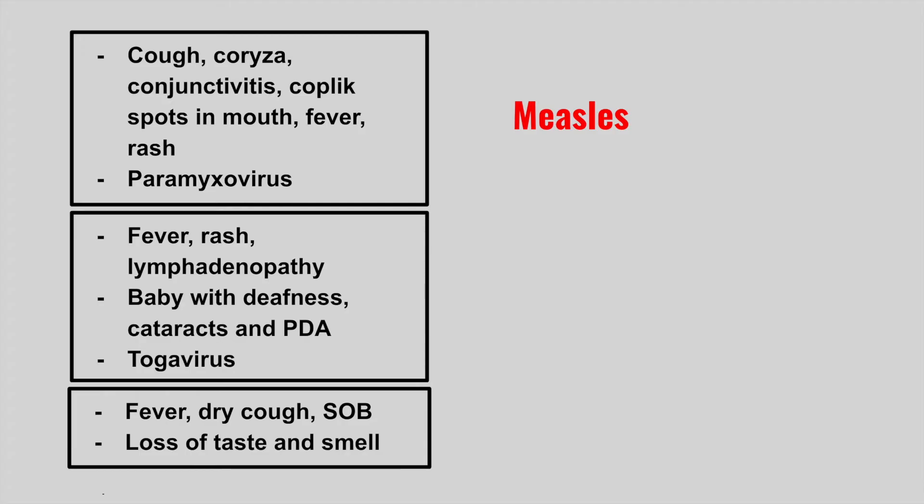Compare this to the next vignette where the patient has a fever, rash, lymphadenopathy, and a baby can get a congenital condition with deafness, cataracts, and a patent ductus arteriosus. It's going to be part of the togaviruses. This is rubella.